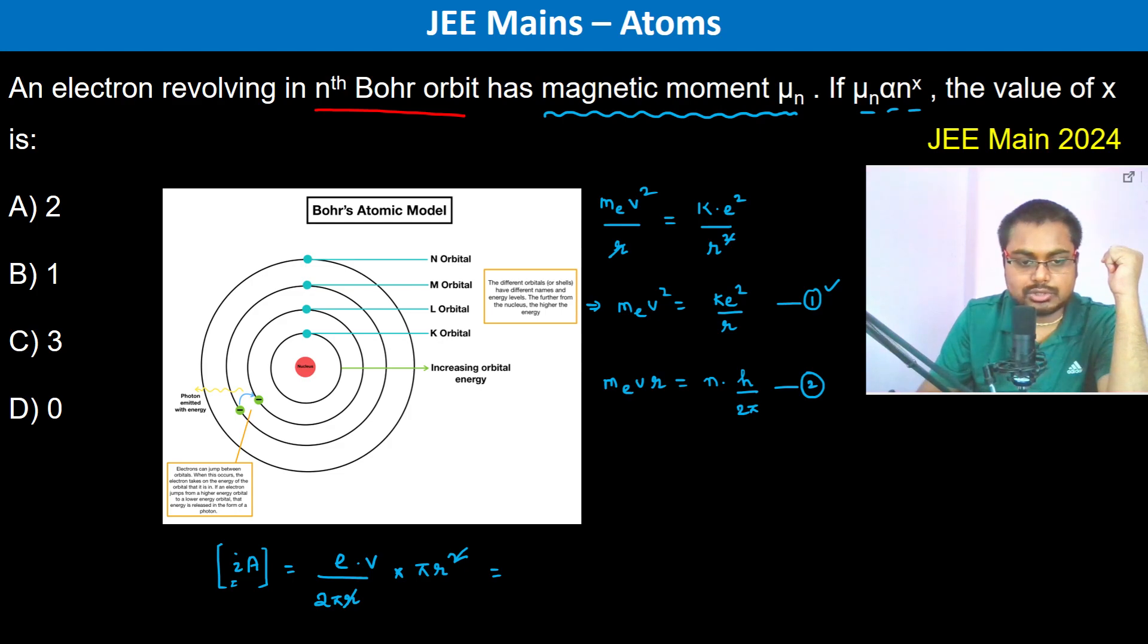So therefore we can see it's going to be eπ by 2π into vr. Now vr is nh by 2π. So this is e by 2 into nh by 2π.